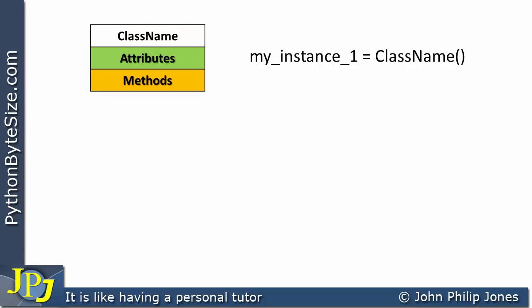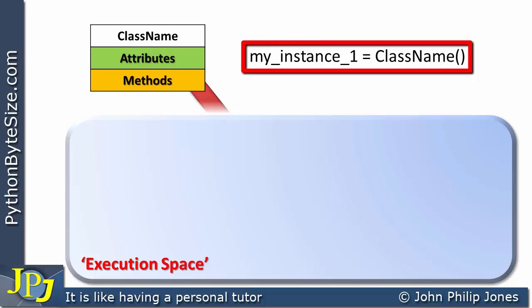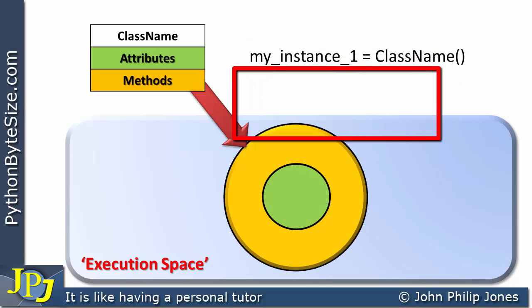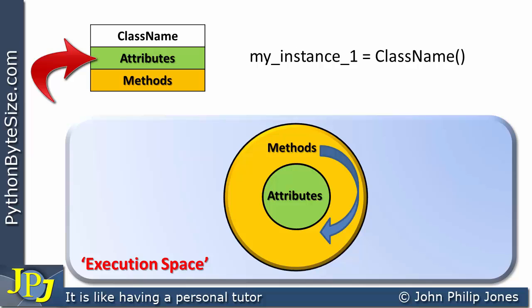Let's now model this against the execution space. Here we can see the execution space. And what we're doing with this program statement here, we're creating an object where this object is based on the class. And if we look at the object, you can see that at its center I am going to have attributes, and round the outside I'm going to have methods. So the attributes that are declared here in the class will appear here in the center of the object, and the methods that are declared here will appear on the outside of this particular object.